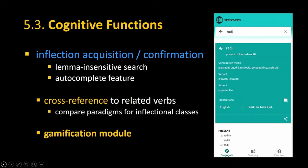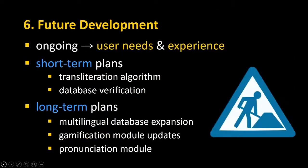There are also cognitive functions: a user can use the app to learn Serbian inflection using the same principles as in receptive and productive situations. There is also a cross-referencing possibility to related verbs that pertain to the same inflectional class, allowing users to see similarities and differences. The gamification module is also accessible via an exercise button.